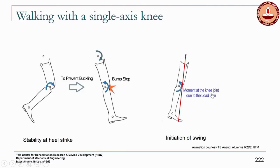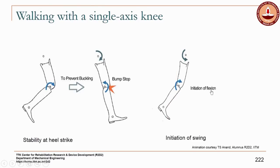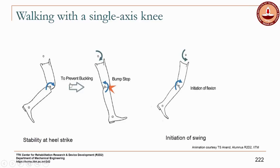In the case of push off, the moment at the knee joint due to the load line is an extension-flexion moment, and the user applies a flexion moment to shift the load line and initiate flexion. This is the working together of how the user can use their residual hip moment to shift the load line in order to create extension or flexion at the knee — controlling the knee through the hip.